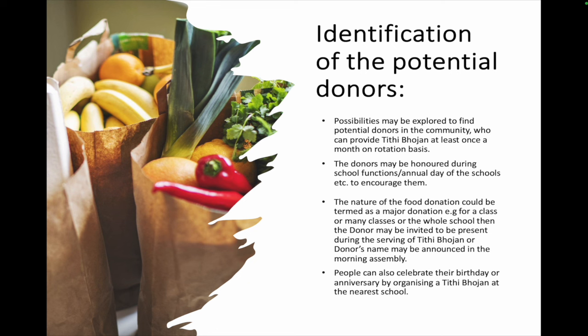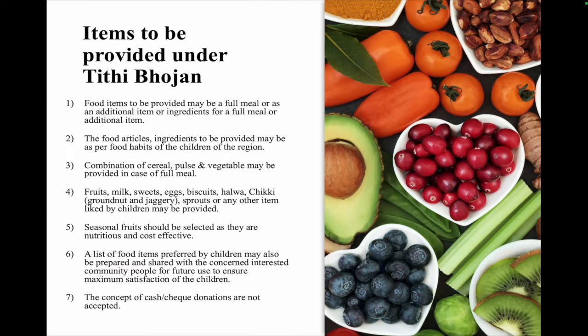Whatever is provided under Tithi Bhojan — full meals or food articles — should align with the food habits of the children of that region. A combination of cereals, pulses, vegetables, millets, and seasonal fruits is ideal. Every school prepares a food menu, and you can use that to supplement. Based on your capacity, local availability, and the season, you can decide what to provide.